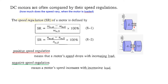Positive speed regulation means the motor's speed drops with increasing load, which is natural. Negative speed regulation, on the other hand, means the motor speed increases with increasing load — we will see this in subsequent lectures.